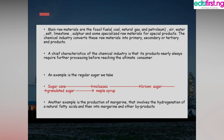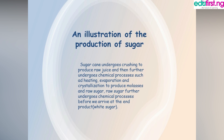Another example is the production of margarine, which involves the hydrogenation of natural fatty acids obtained from plants or animals, converting them into margarine and other byproducts. An illustration of sugar production shows that sugar cane undergoes crushing to produce raw juice, which then undergoes chemical processes such as heating, evaporation, and crystallization to produce molasses and raw sugar.